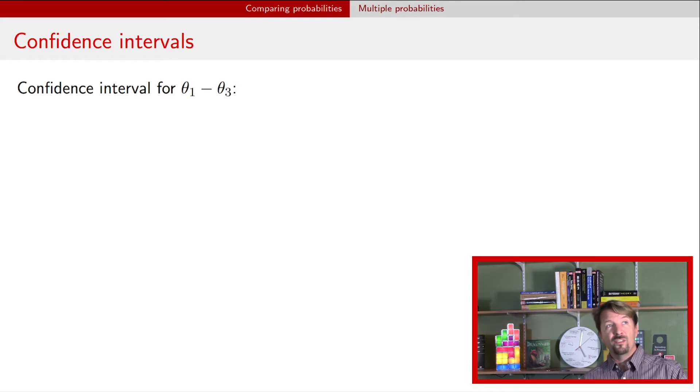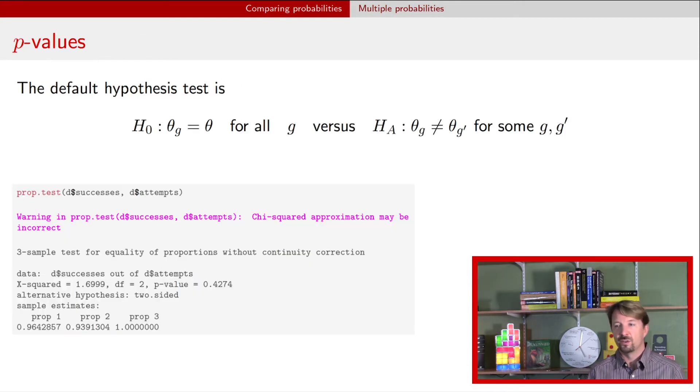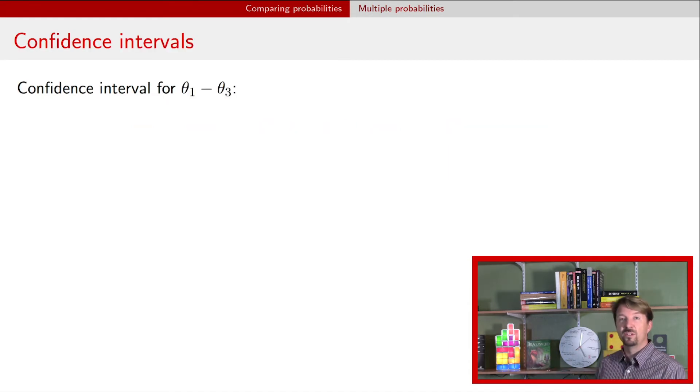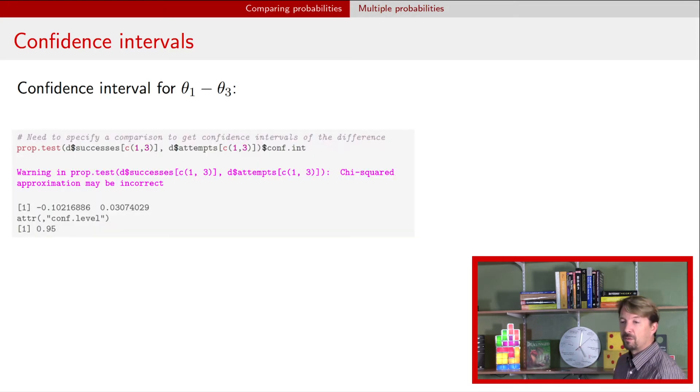All right, so if we were interested in calculating confidence intervals here, you'll notice the output of this function didn't show you any confidence intervals. What we really need to do is we need to just select the individual comparisons we want to make. So here's comparing the first and the third to see if our data are incompatible with the model that says that those two are equal.